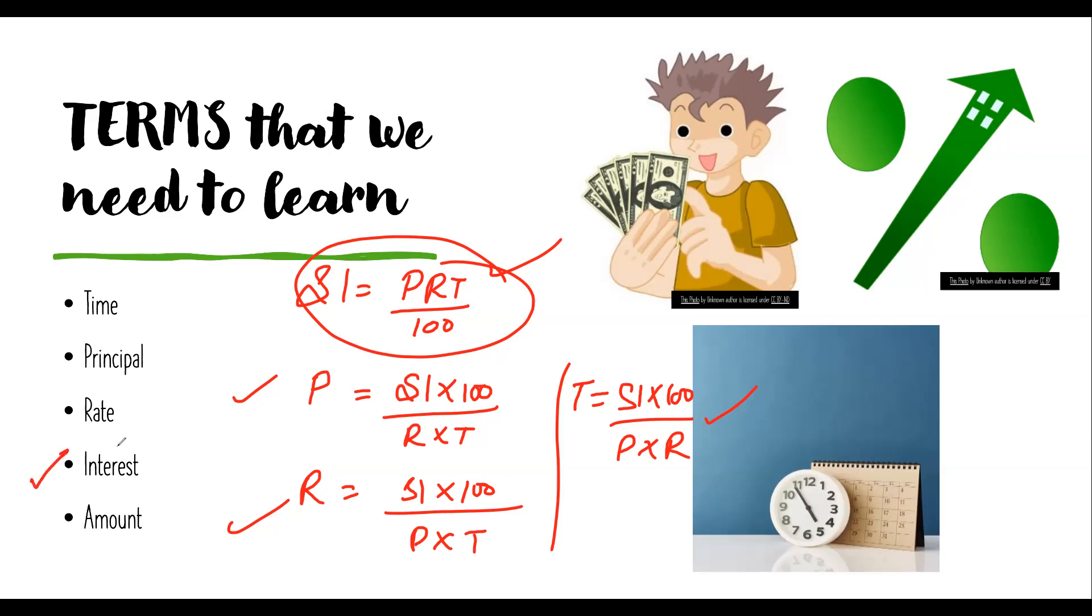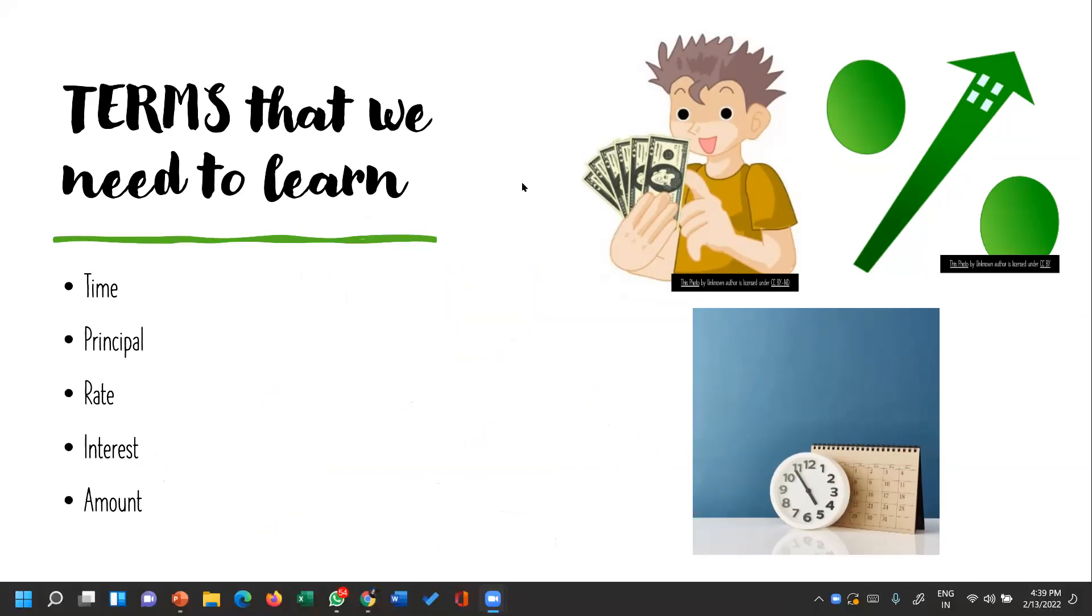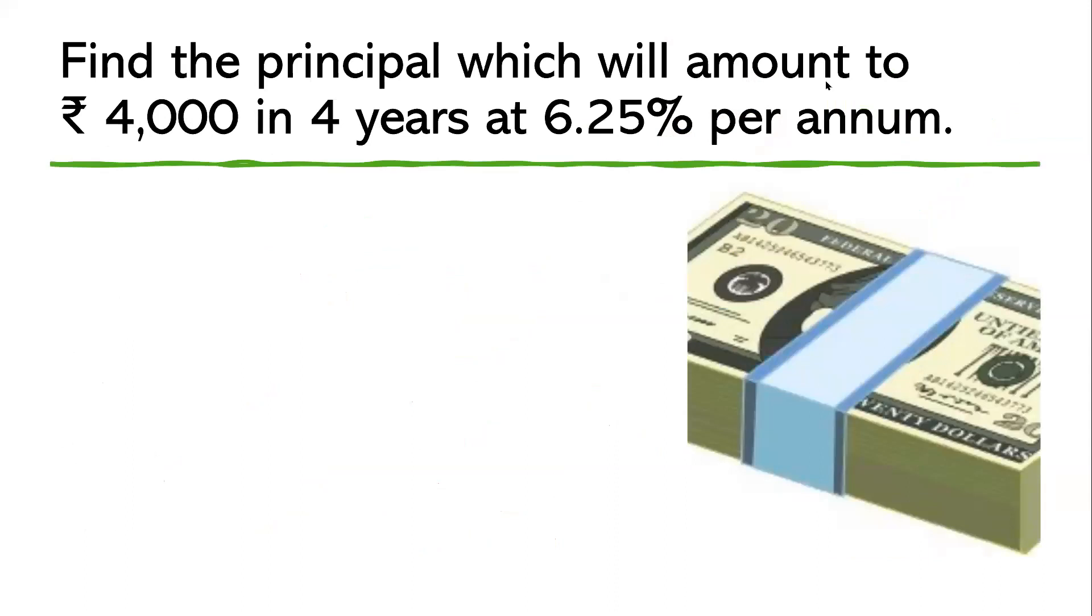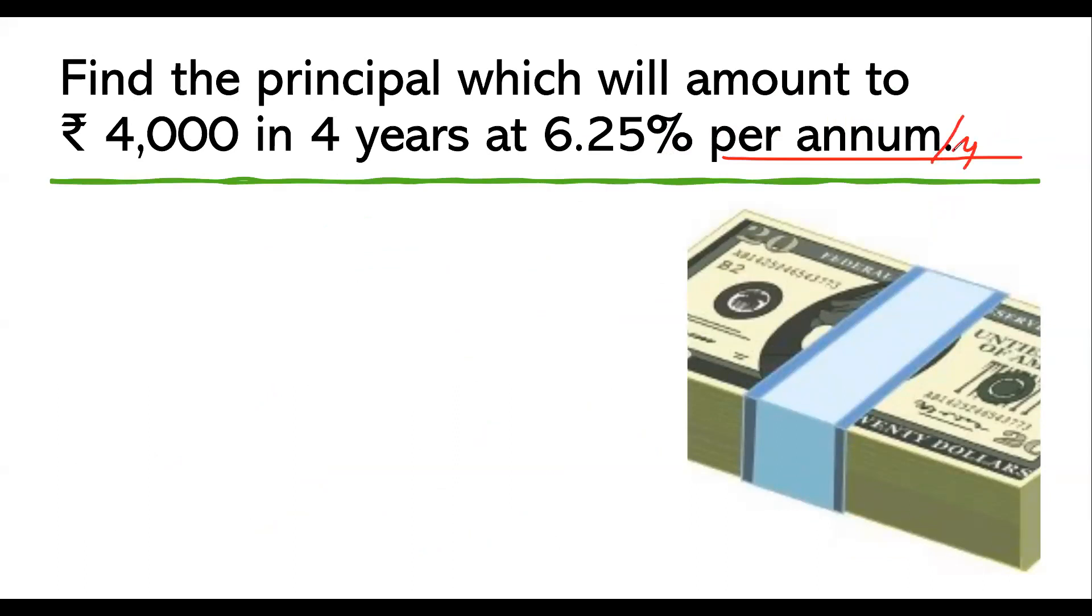Let's see what we have more in this video. We have some questions based on this. The first question says: Find the principle which will amount to rupees 4,000 in 4 years at 6.25% per annum. Now per annum means yearly, it means 6.25% rate per year. So what is asked? What is asked, put a question mark. He's asking for principle. P = ? Amount is given as rupees 4,000. Time is given as 4 years, and rate is given as 6.25%.